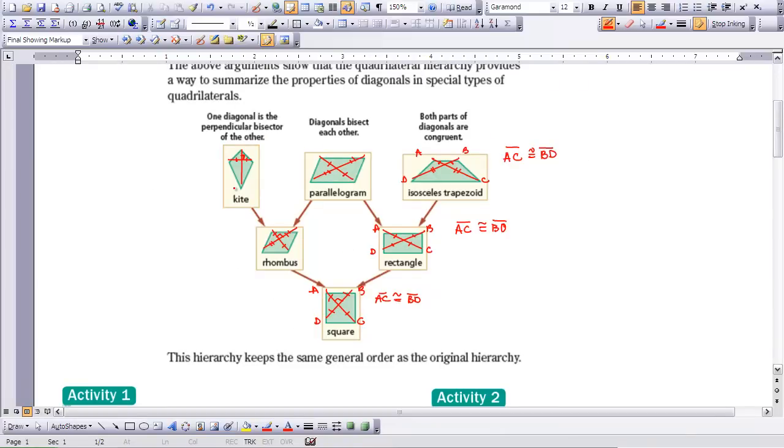So we know the diagonals are perpendicular and also a square. But with the square, the diagonals are all congruent. So we don't necessarily want to include that. So we're just looking at the kite and the rhombus.